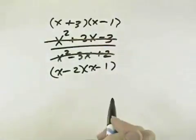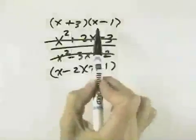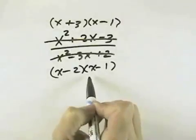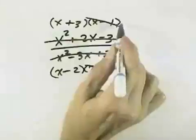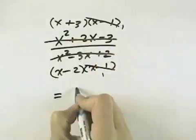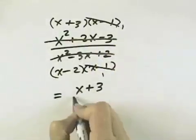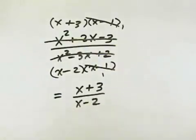So that would be the factored form for the denominator. Now we have 2 factors in the numerator, 2 factors in the denominator. We can see that there is a common factor of x minus 1, and that is, therefore, what we can cancel. And when we do, that leaves us x plus 3 in the numerator and x minus 2 in the denominator.